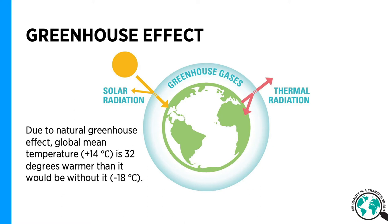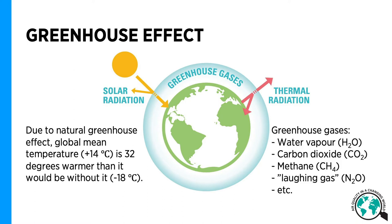Due to this natural greenhouse effect, the global mean temperature is plus 14 degrees Celsius — 32 degrees warmer than it would be without it. Without this natural greenhouse effect, we would live in a freezer with minus 18 degrees Celsius average temperature. These greenhouse gases are most importantly water vapor, which causes approximately 60% of the natural greenhouse effect, also carbon dioxide, methane, and some others.